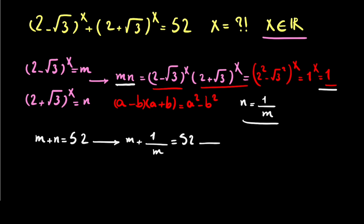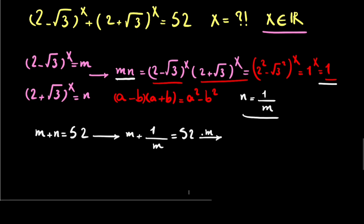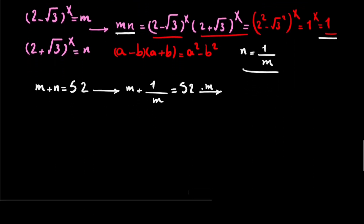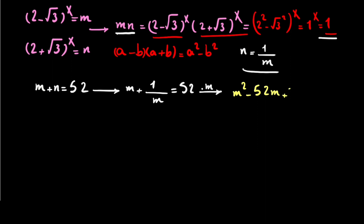Now if we multiply this equation by m, our equation becomes m squared minus 52m plus 1 equals 0. So here we have a nice quadratic equation.